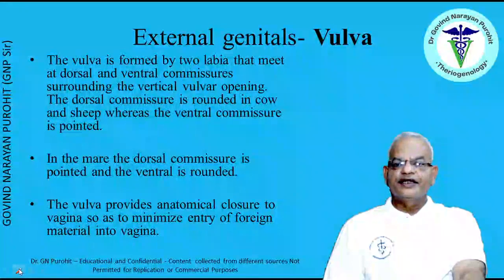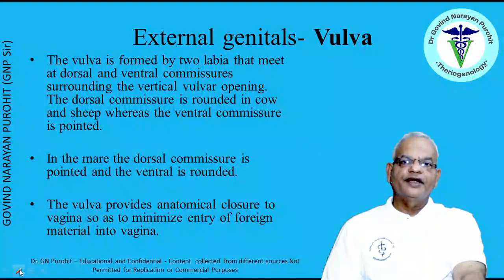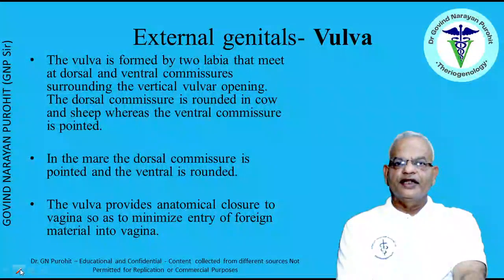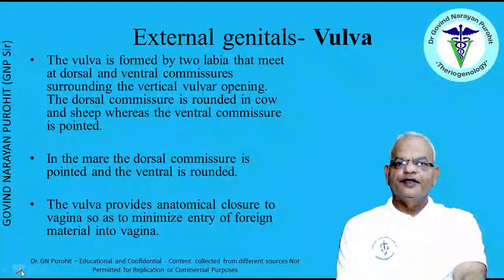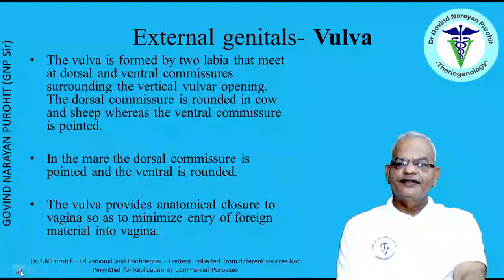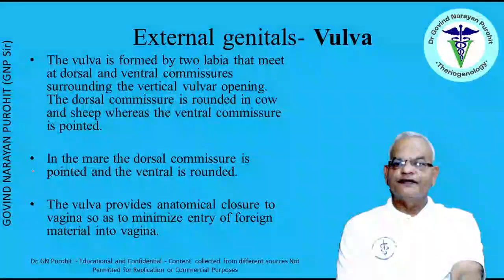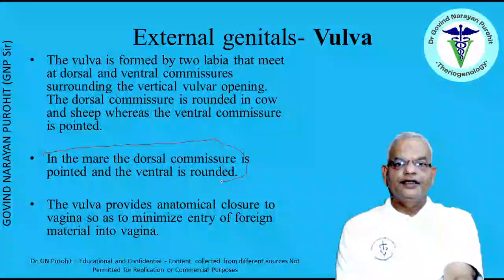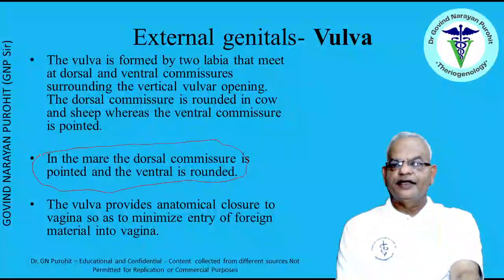The external genitalia: the vulva is formed by two labia that meet at the dorsal and ventral commissures surrounding the vertical vulvar opening. The dorsal commissure is rounded in the cow and sheep whereas the ventral commissure is pointed. In the mare, the dorsal commissure is pointed and the ventral is rounded. This is a key difference in the commissures between ruminant species and the mare.